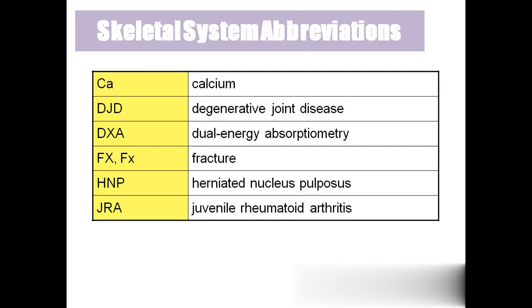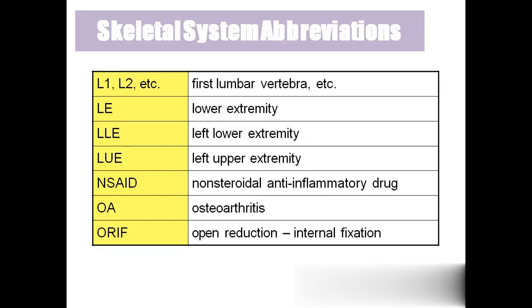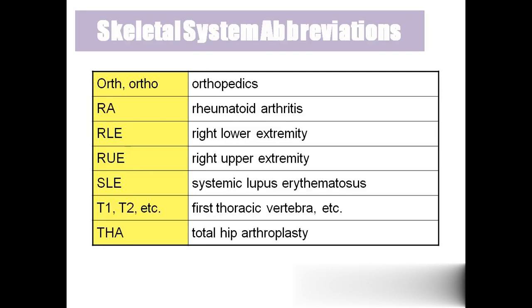FX — fracture; HNP — herniated nucleus pulposus; JRA — juvenile rheumatoid arthritis, when a young person has rheumatoid arthritis; L1, L2, L3 — lumbar vertebrae; LE — lower extremity; LLE — left lower extremity; LUE — left upper extremity; NSAID — non-steroidal anti-inflammatory drugs, which are painkillers; OA — osteoarthritis; ORIF — open reduction and internal fixation, which is the surgery for compound fracture; ORTHO — orthopedics; RA — rheumatoid arthritis.